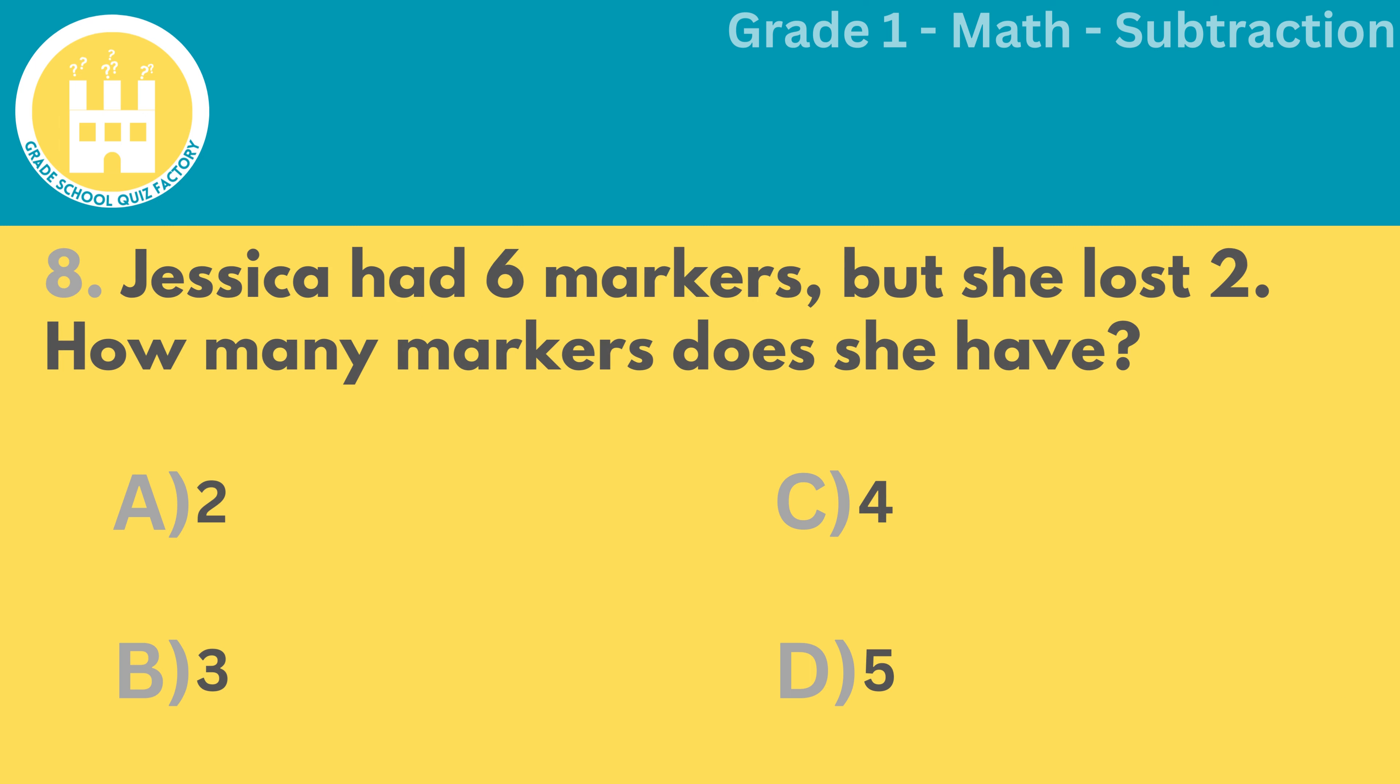Next, for number 8. Jessica had 6 markers, but she lost 2. How many markers does she have?